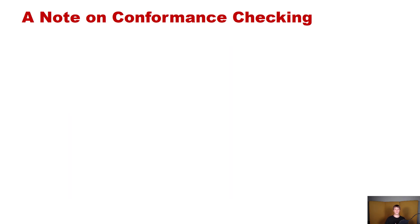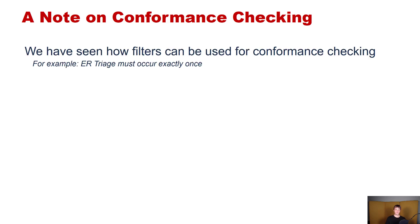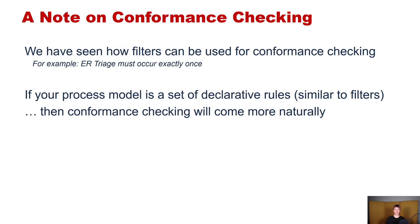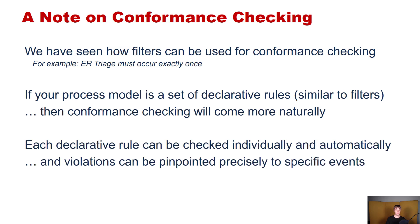Furthermore, a small note on conformance checking. In previous lectures we showed how filters can be used to check process conformance with respect to specific process rules — for example, ER triage must occur exactly once. If your process model is a set of declarative rules similar to filters, then conformance checking comes more naturally. Each declarative rule can be checked individually and automatically, and violations can be precisely pinpointed to specific events. That is one of the main advantages of the declarative approach, in addition to allowing process flexibility.